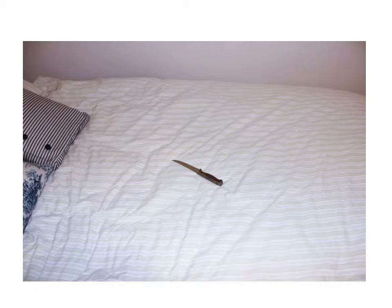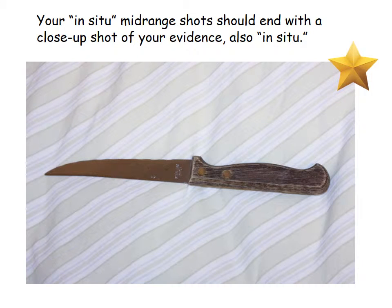Here is a mid-range photograph showing the knife in relation to the rest of the bed. The image before showed it in relation to the edge of the table so we can get an idea of how close that was. This one shows it in relation to the bed — is it towards the center, the head, or the foot of the bed? So this mid-range is showing it in relationship to the other surrounding items. When taking your in situ — meaning unchanged, unaltered — mid-range shots, you should end with a close-up shot of your evidence that's also in situ.